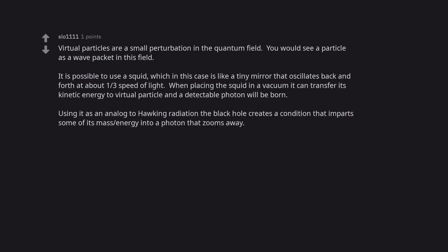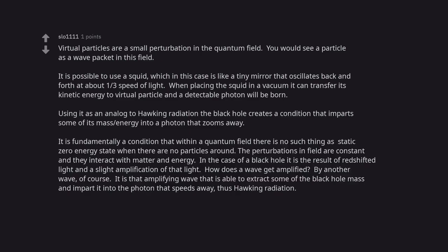Using it as an analog to Hawking radiation, the black hole creates a condition that imparts some of its mass-energy into a photon that zooms away. It is fundamentally a condition that within a quantum field there is no such thing as a static zero-energy state when there are no particles around. The perturbations in the field are constant and they interact with matter and energy. In the case of a black hole, it is a result of red-shifted light and a slight amplification of that light.